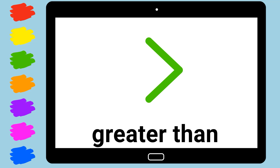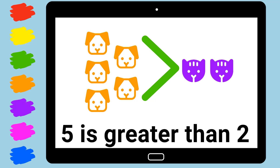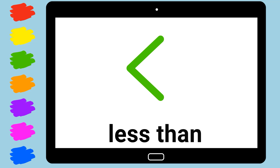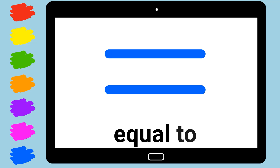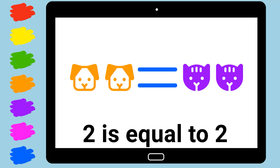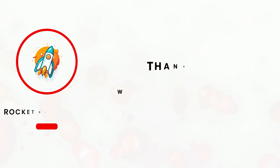Greater than. Five is greater than two. Less than. Three is less than four. Equal to. Two is equal to two. Two is equal to three.